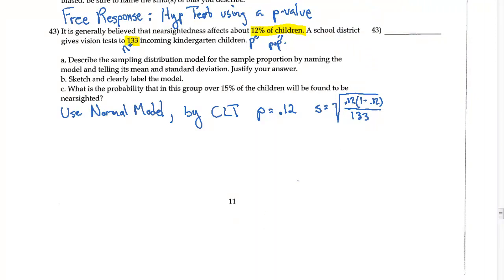So I'm going to come over here and I've got 0.028. So there's my standard deviation. Justify your answer. Well, one, I have to assume independence. And if you're looking at incoming kindergarten children, probably no issue with independence, so that's fine.